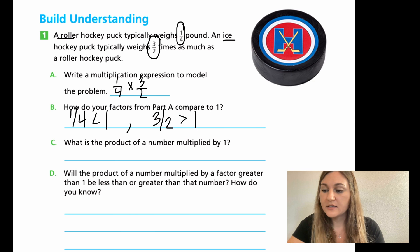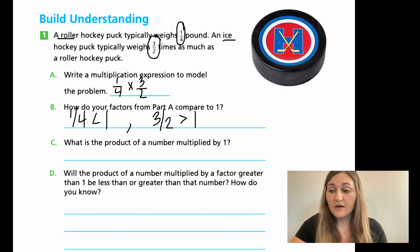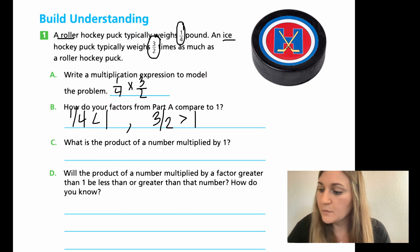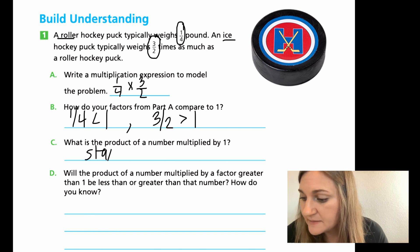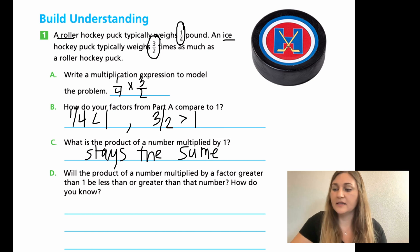So for C, what is the product of a number multiplied by one? This is kind of a silly question. What is the product? Product means answer of a number, any number, when you multiply it by one. And if you know your math facts, it doesn't change. It's the same original number. So what I'm going to just say is it stays the same. Any number, let's take 5,162. When I multiply it by one, I get 5,162, right? It stays the same. It doesn't change, which we all know. And we'll see why that's important in a second.